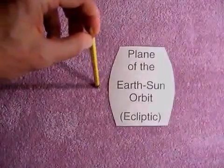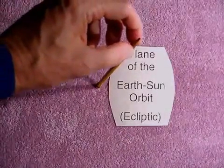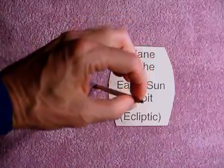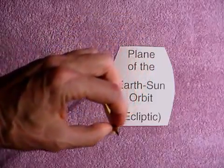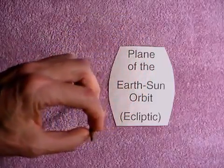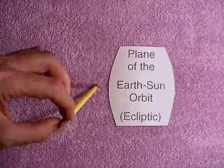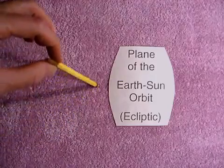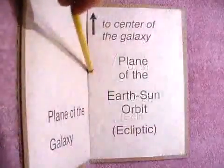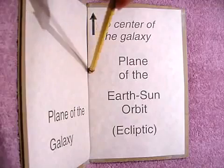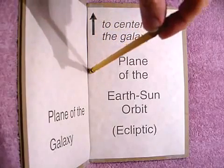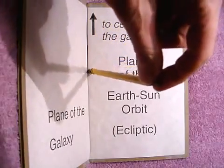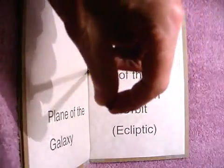It is important to note that without the galactic plane, which makes the crease, each and every point on the entire circle of precession would look basically the same — there would be no naturally occurring points of distinction. But when we add the galactic plane to our model, we see that this gives rise to the four naturally occurring points that we are talking about.